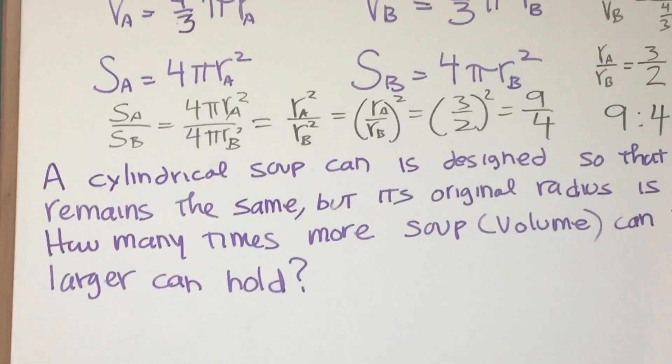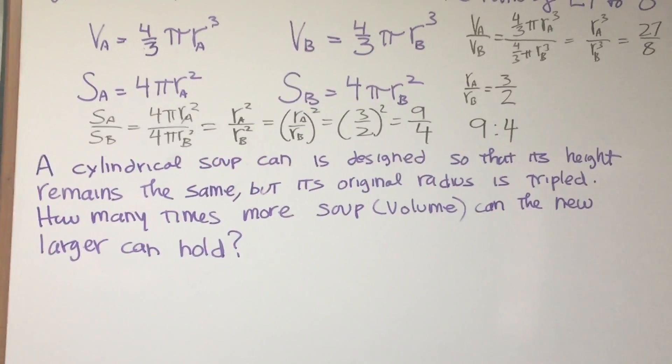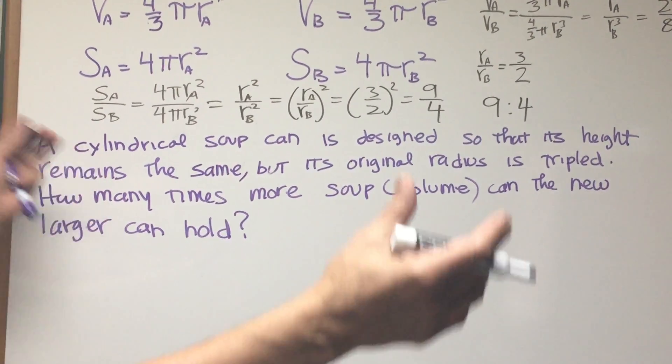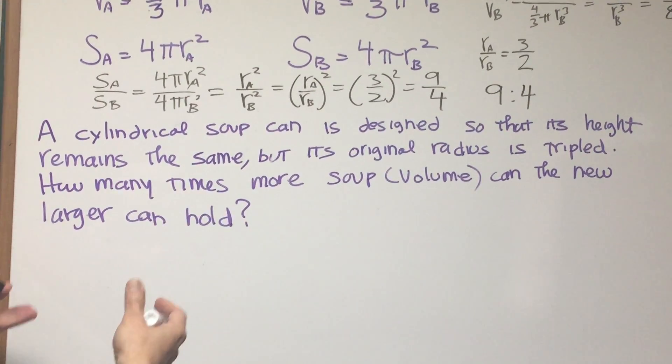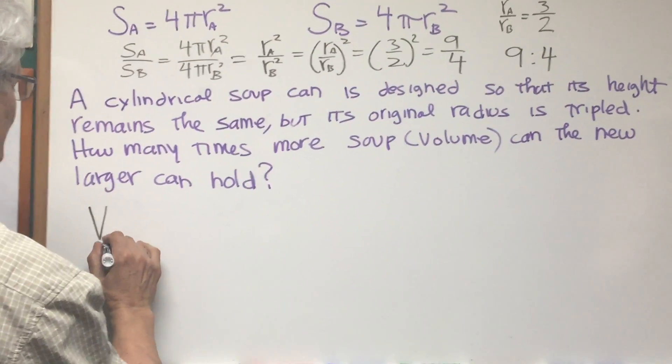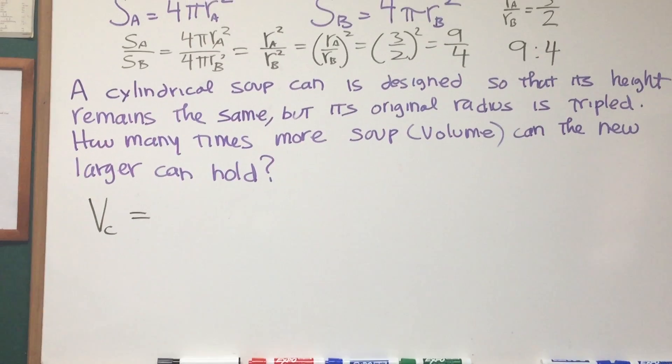Okay, now we move on to the next problem involving a cylinder. A cylindrical soup can is designed so that its height remains the same, but its original radius is tripled. How many times more soup can the new larger can hold? Okay, so what's the original cylinder, what is the volume of the cylinder?